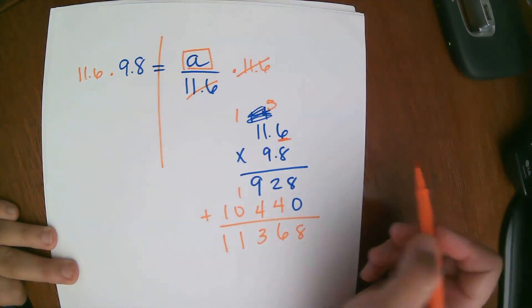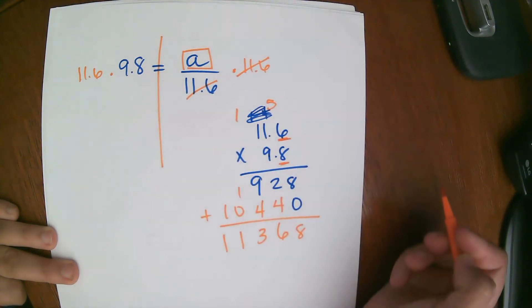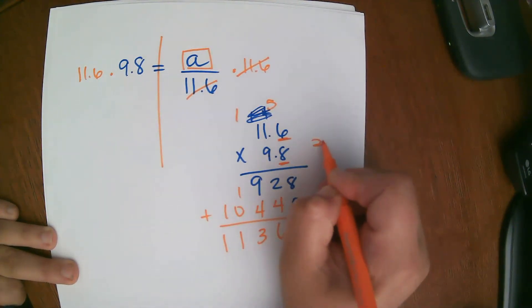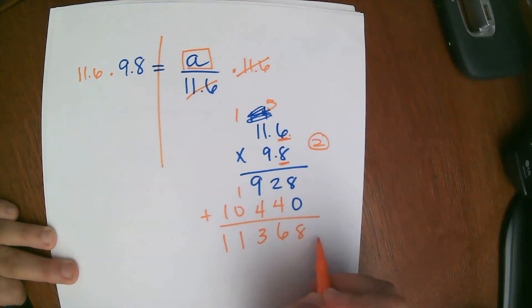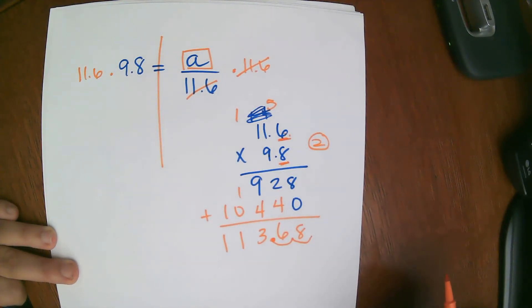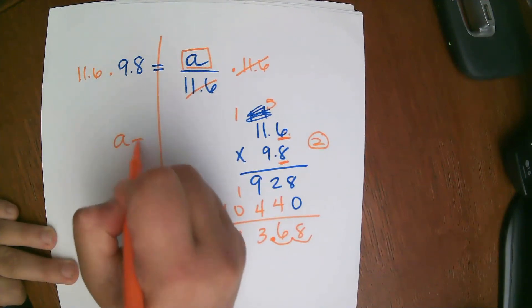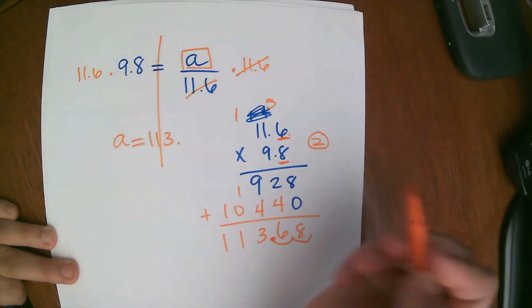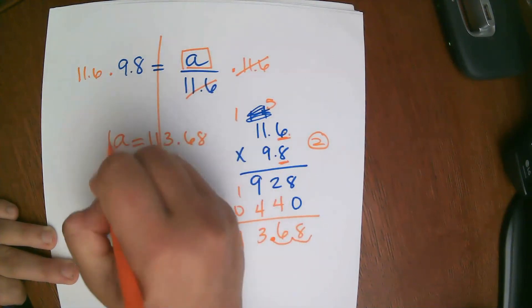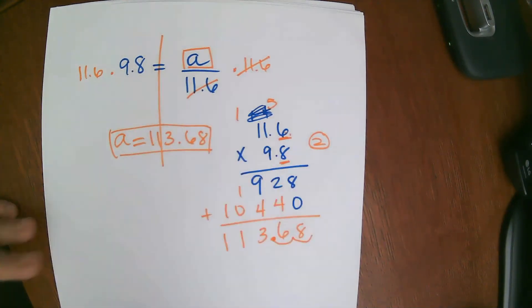6, 13, 1, 1. Now we're going to place our decimals. So we have one digit to the right of this decimal and one digit to the right of this decimal, making it a total of two digits. So we're going to start from the far, far end, and we're going to move over two spots. And that's where our decimal lands. So my answer is A equals 113 and 68 hundredths.